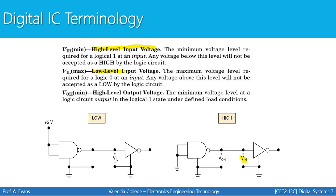You also have your low level input voltage, which represents the maximum voltage level required for a logic low at an input. For example, an inverter may only be able to interpret a signal as a low if that input signal is 0.8 volts or less. If the NAND gate sends 1.2 volts, the inverter will not interpret that as a low. So the low level input voltage is the maximum level an input can receive and consider a logic 0.